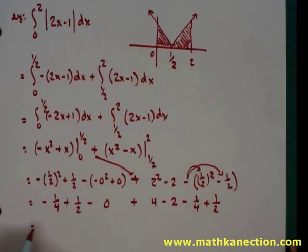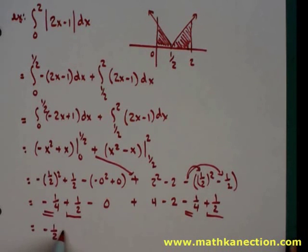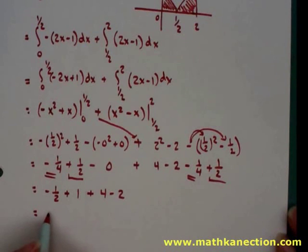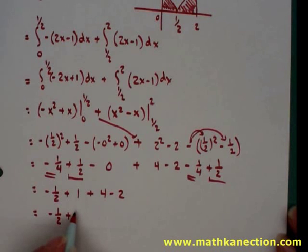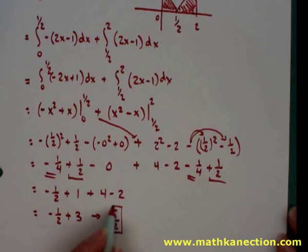Simplifying: negative one-fourth and negative one-fourth combine to make negative one-half. Positive one-half and positive one-half combine to make 1. Adding the whole numbers together, we have negative one-half plus 3, which combines to give our final answer of five-halves.